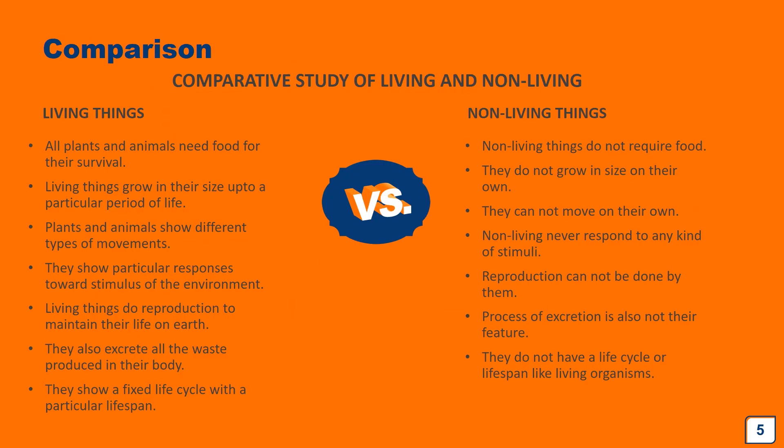We will now do a comparative study to understand further differences between living and non-living things. First, all living organisms cannot survive without food — food gives us energy for daily activities and for growth. Non-living things do not require any food. Plants are autotrophs or producers — they make their own food through photosynthesis. All other animals take food from plants directly or indirectly, so they are called heterotrophs or consumers.